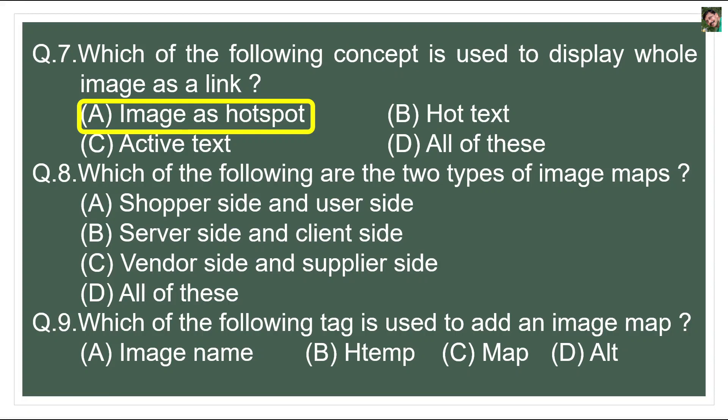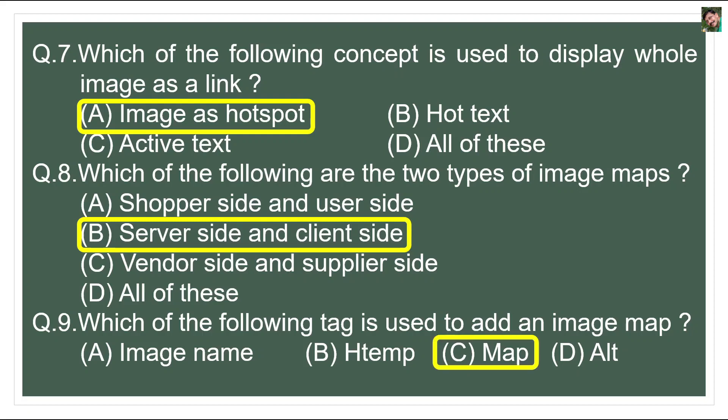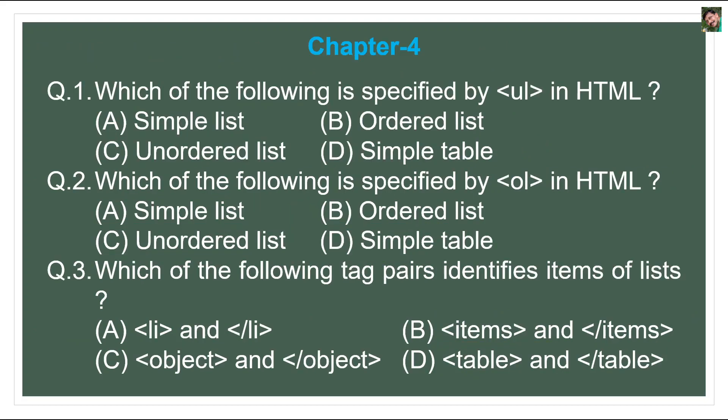Question 8: What are the two types of image maps? There are two types of image mapping: server-side image mapping and client-side image mapping. Question 9: Which tag is used to add an image map? The map tag is used to create image mapping when working with images.